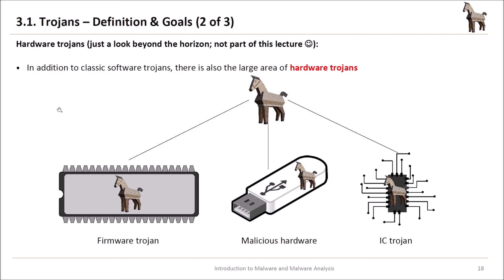There are also hardware Trojans — a look beyond the horizon, not part of this lecture. In addition to classic software Trojans, there is the large area of hardware Trojans. A hardware Trojan could be a firmware Trojan that is part of a device's firmware. It could be malicious hardware — for instance, finding a USB stick in a company parking area, plugging it in, but it is actually malicious hardware that installs malware. And the most dangerous hardware Trojans are IC Trojans — Trojan horses built into the integrated circuits inside your computer.